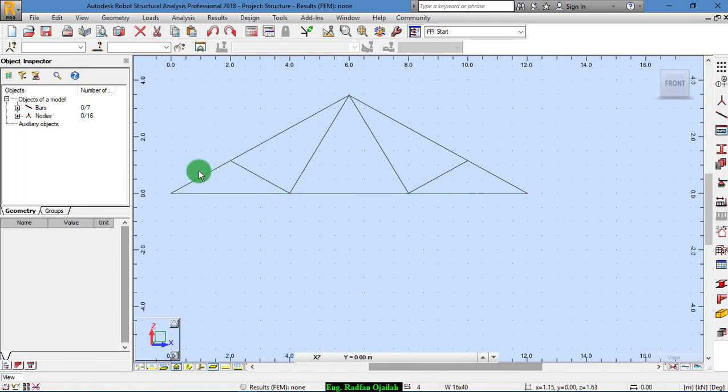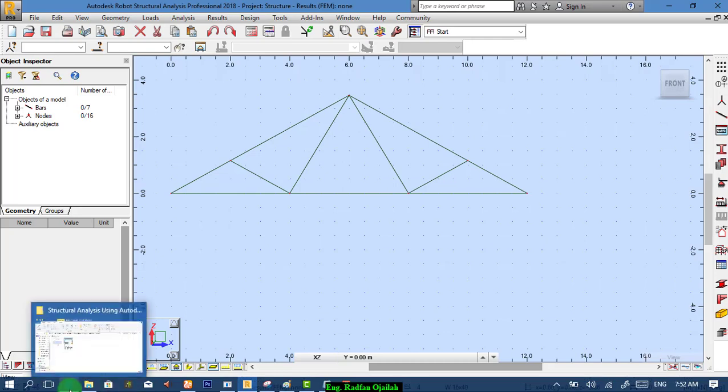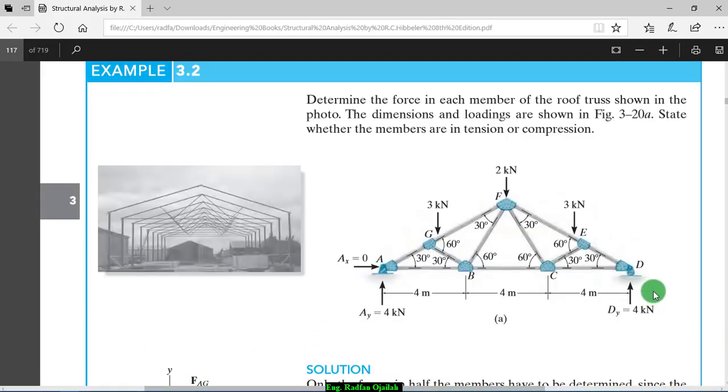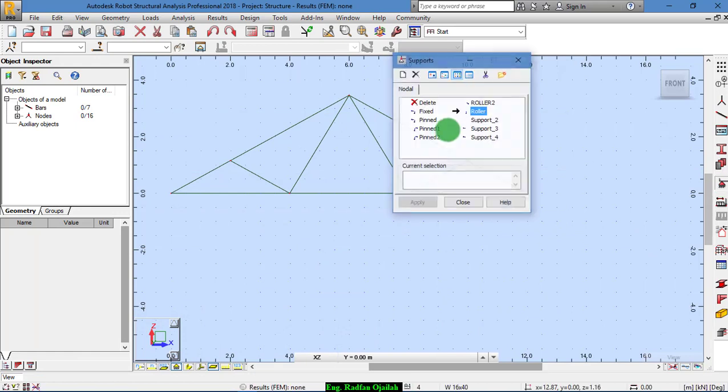Now we assign supports. We have here hinged and here we have a roller as shown. Pin for this direction and roller.